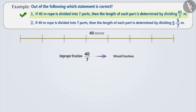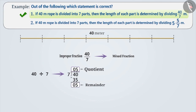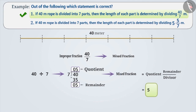Let's represent it as a mixed fraction. To express it in a mixed fraction, we divide the numerator, that is 40, by the denominator, that is 7. Upon dividing, we get the quotient as 5 and the remainder as 5. Now we write the mixed fraction in this way. Therefore, the mixed fraction is 5 and 5 by 7. That means option 2 is also correct.